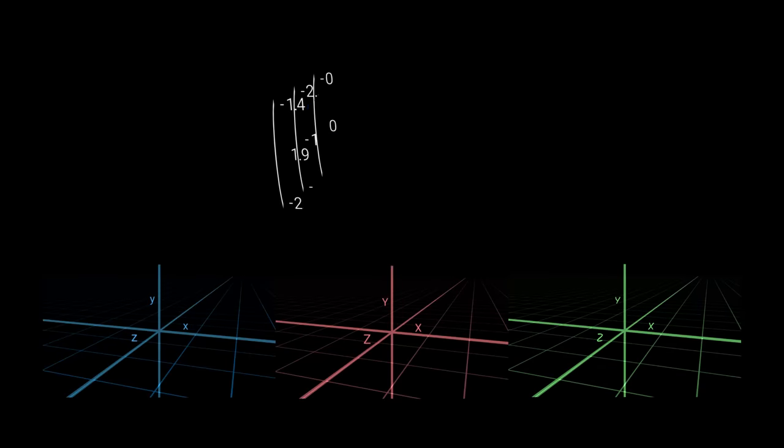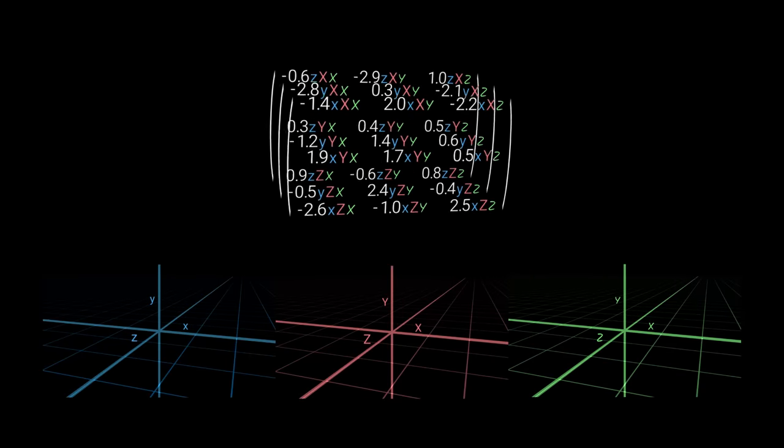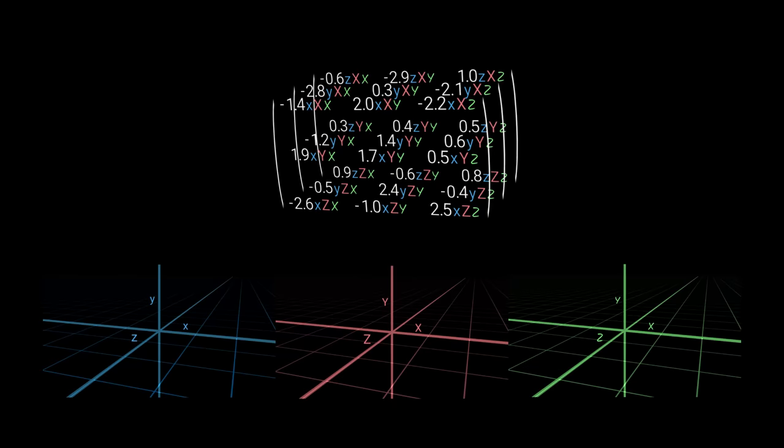Here is a third-order tensor. It has 27 components, one for each combination of labels from the three spaces. We are yet to explain the full meaning of these label combinations.